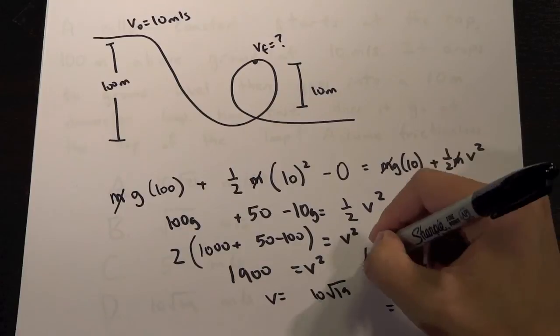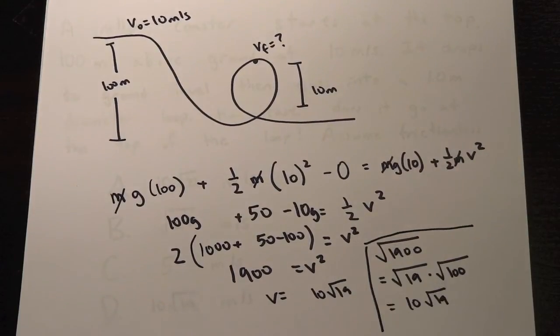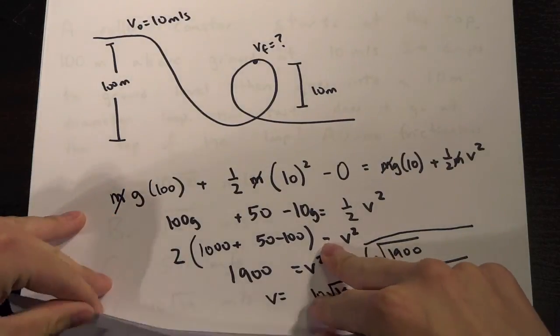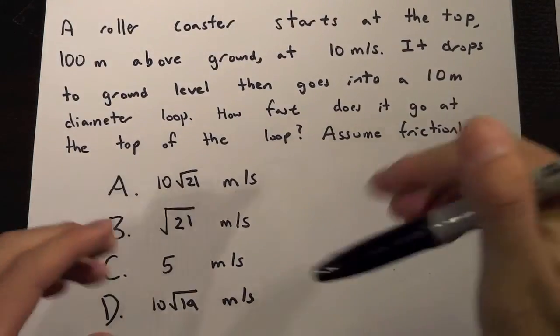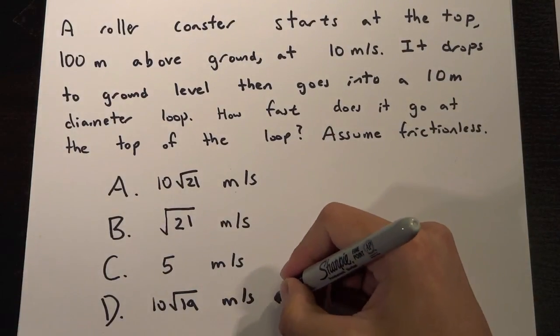So just brush up on this, very simple, but some of us tend to forget that. So 10 square root of 19. And if we look back at our question, we see that 10 square root of 19 is this choice right here.